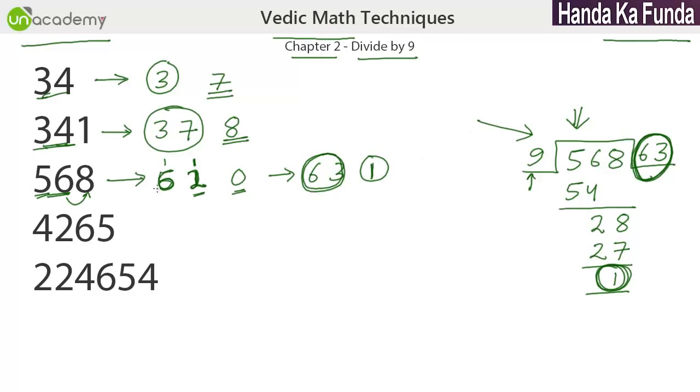That is what we had got here. But this method, once you get the hang of it, would be a lot faster. Let's check with 4, 2, 6, 5. So, 4. 4 plus 2 is 6. 6 plus 6 is 12. Carry is generated. So, I make this as 7. Make this 2 as 3. Then, I have 3 plus 5 as 8.